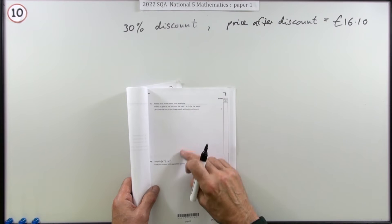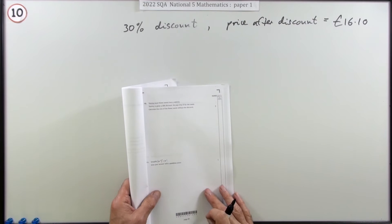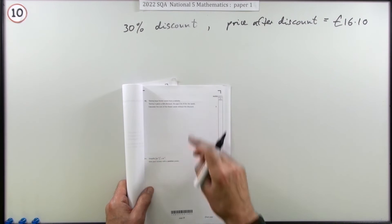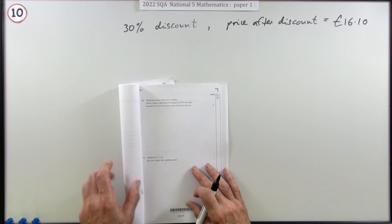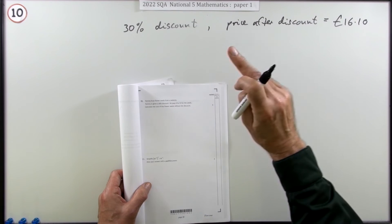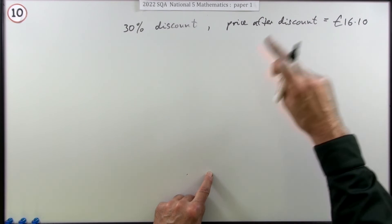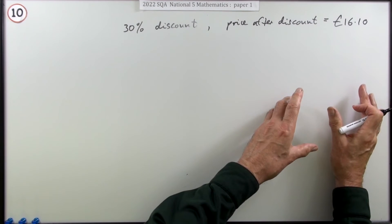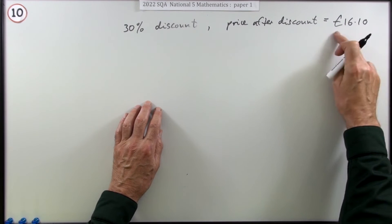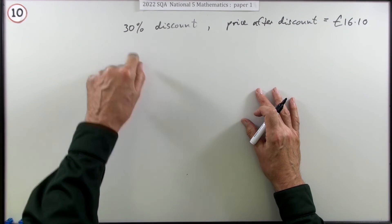Number 10, for three marks — it's a discount question. You've got the discounted price and, knowing the percentage of the discount, you need to find what the original price would have been. It says something can be bought for a 30% discount online; if you end up paying £16.10, what was the full price? The key thing to realise is: you don't just find 30% of this and add it back on, because that would be 30% of a different amount. 30% of the original is more than 30% of this smaller amount, so don't do that.